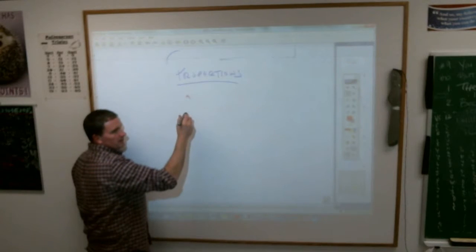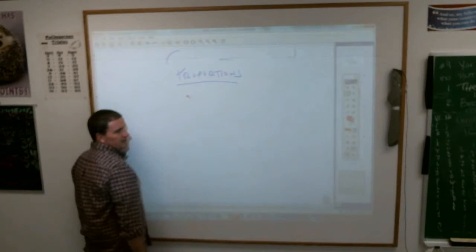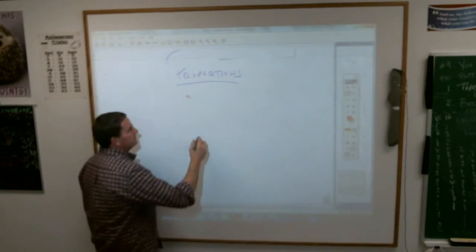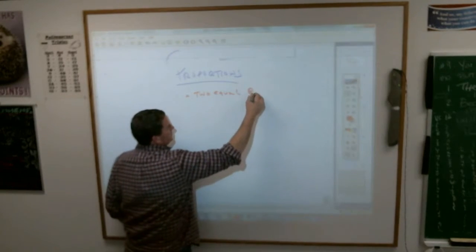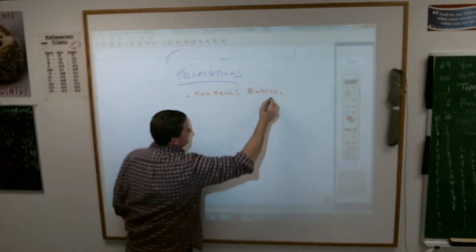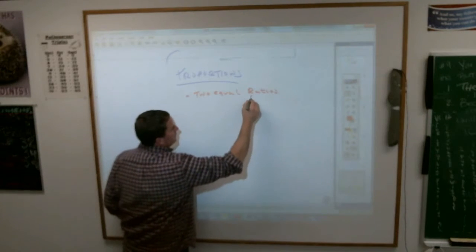Andrew says a proportion is a statement that two ratios are equal. Wow, that's a lot like it is in the book. Two equal ratios or two equal fractions.